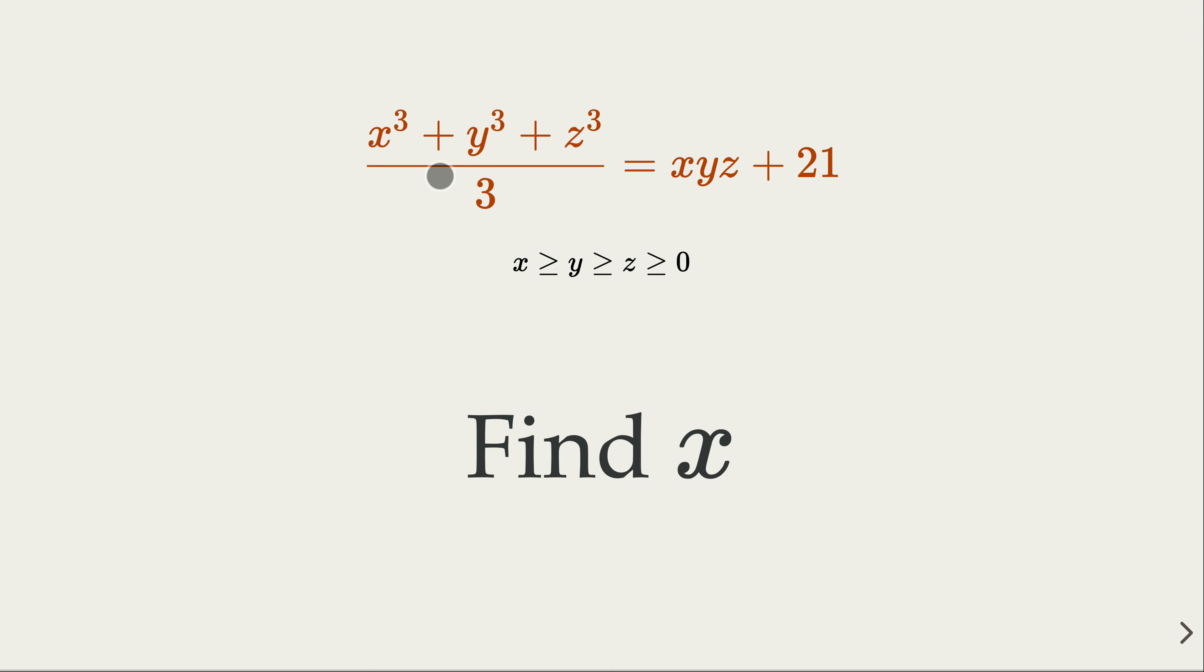This is from Duke Math Meet back in 2015. Of course, we're talking about integer solution here with three variables x, y, z. They're symmetrical, so it's okay to assume x is greatest and z is smallest. We try to find x.